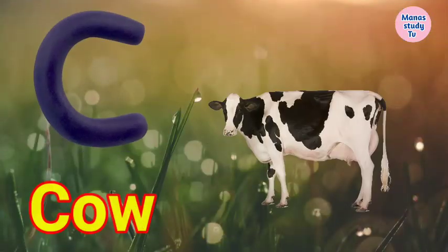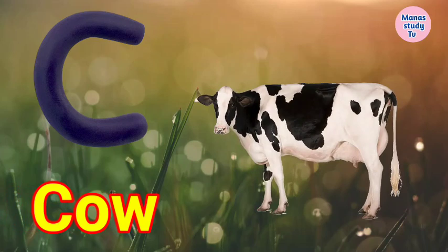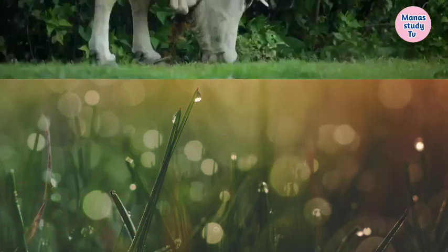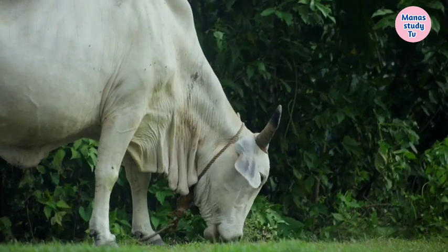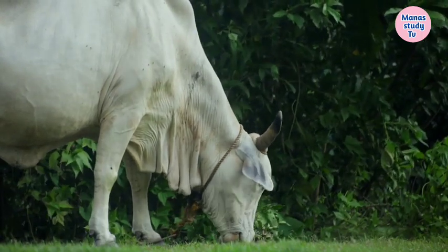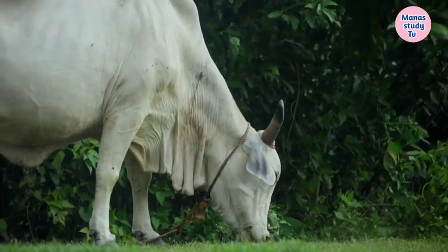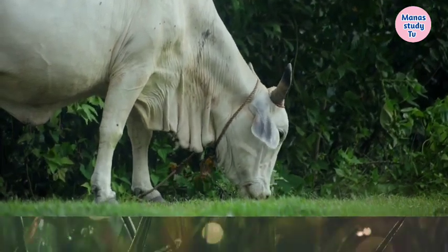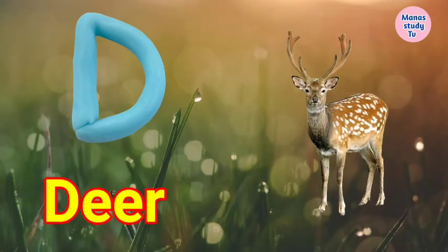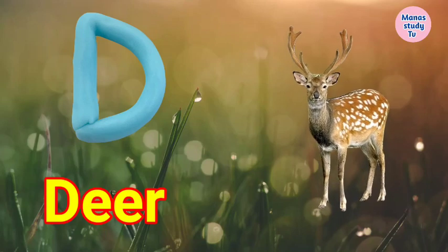C for Cow. Cow means Gai. D for Deer. Deer means Hiran.